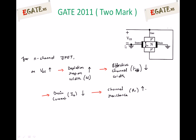When VGS is applied and the gate is open, no depletion region is formed across the PN junction. There are two PN junctions on both sides of the gate — one P-plus N junction and another P-plus N junction. Since the gate is open, no depletion region is formed, and the maximum thickness of 10 micrometers is available for the channel.